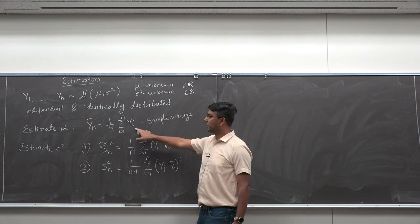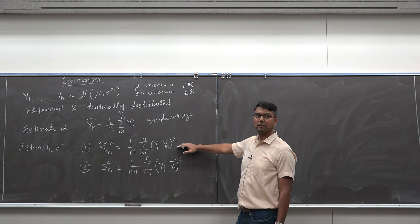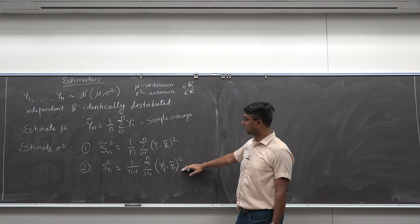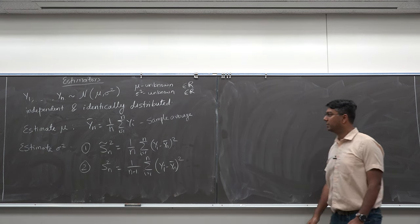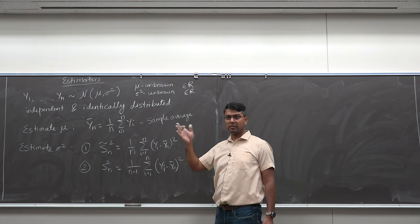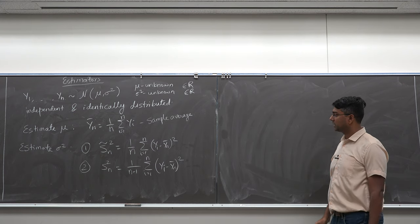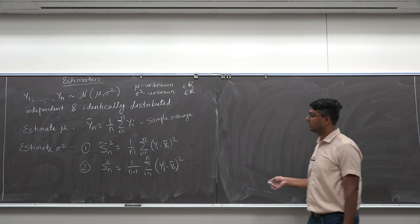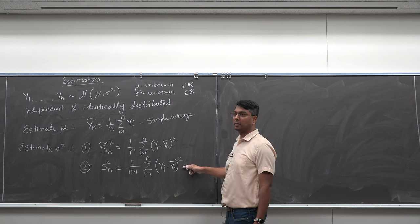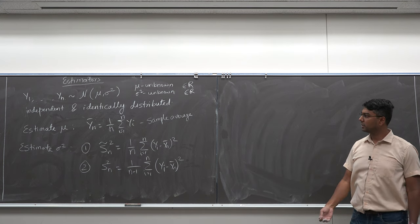Do you agree that the sample average is a good estimator for the mean? That looks very reasonable. Do you agree that the variance formulas look okay? But I am still uncertain about the n minus 1. Average is fine — we have done that all our lives. But n minus 1 in the denominator seems fishy. So let's find out which is a good estimator and what we mean by a 'good estimator.'